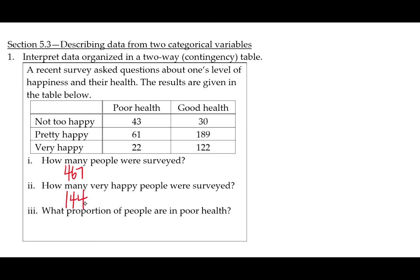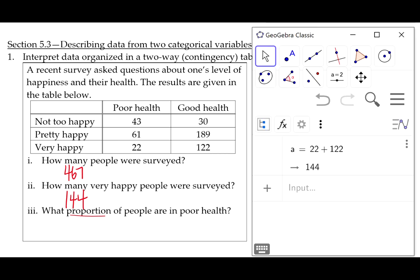Finally, part three says, what proportion of people are in poor health? Notice that this question is asking for a proportion, not a count or a frequency. In order to compute a proportion, we need to take the number of individuals that we're interested in and then divide by the total number of individuals that were in the survey.